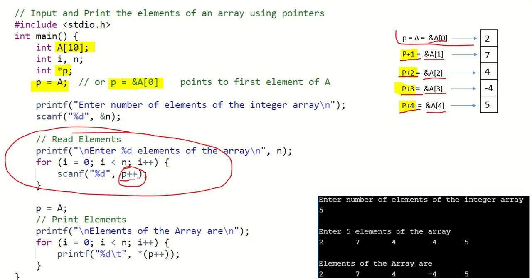After scanning the fifth item, P is incremented to P+5. So to print the elements we have to first reset the pointer to point to the first element of the array. That is why P = A is written before the print loop.